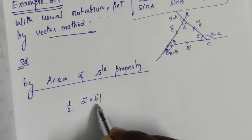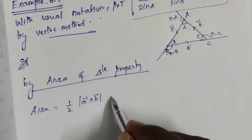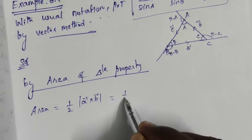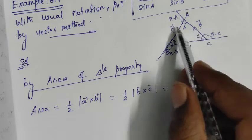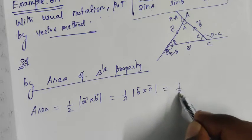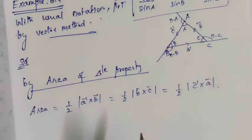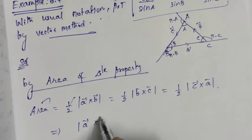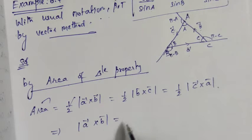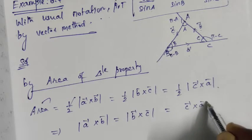The area is also equal to half times B vector cross C vector. We can write three equal expressions for the area using two side vectors at a time: half |A⃗ × B⃗| = half |B⃗ × C⃗| = half |C⃗ × A⃗|.